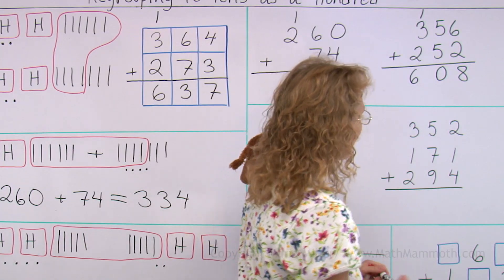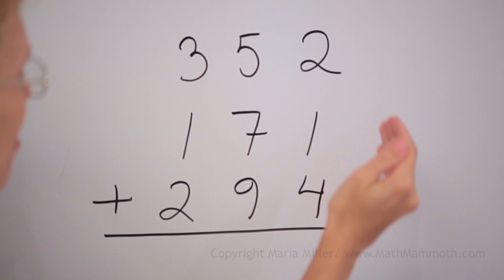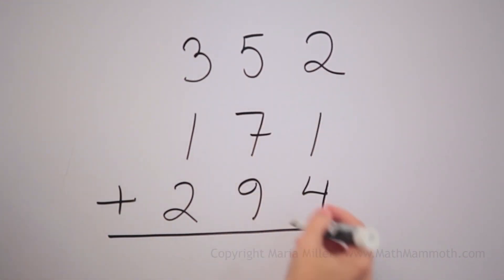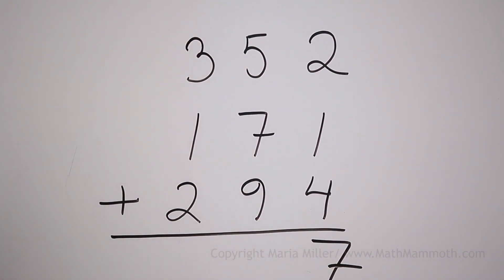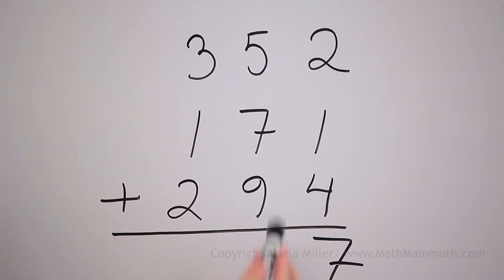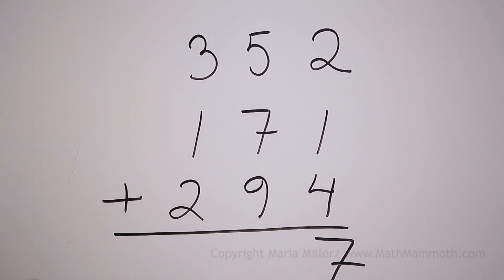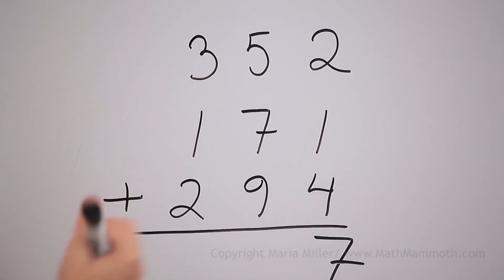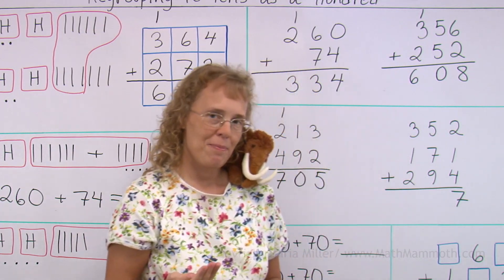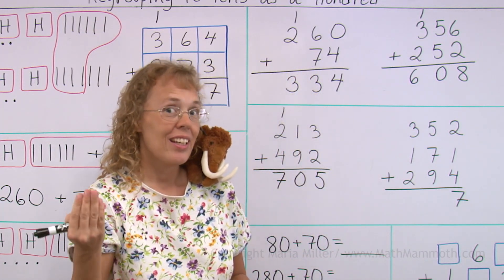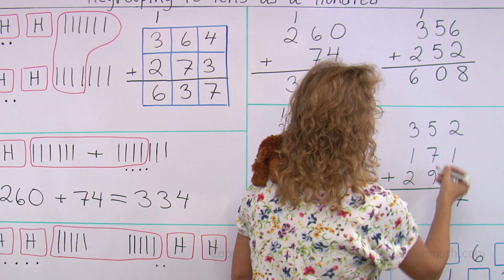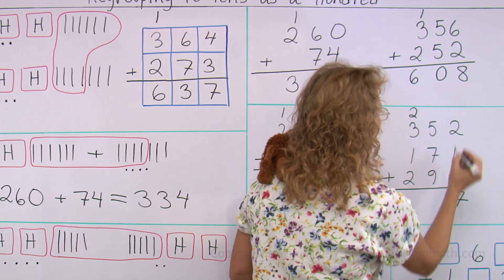Then three numbers. Two plus one plus four, that would be seven. And then in the tens, five plus seven plus nine. Five and seven makes twelve, and twelve and nine, you tell me, twenty-one. So twenty-one goes like this, two and one.